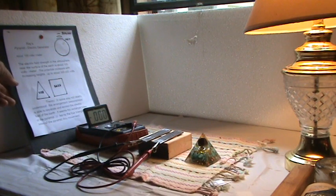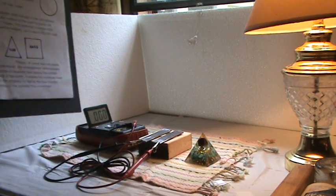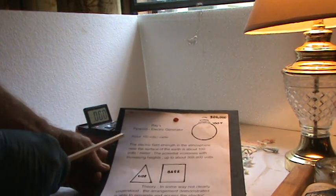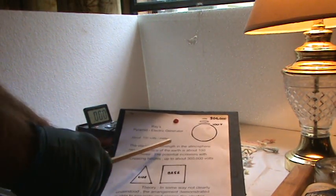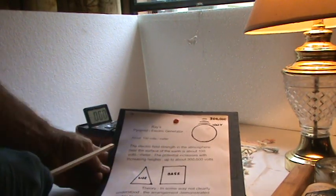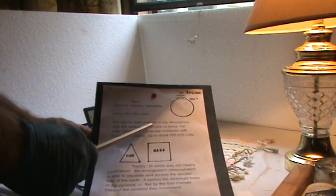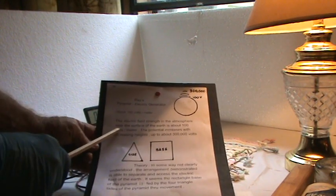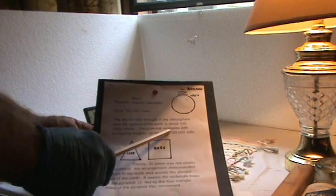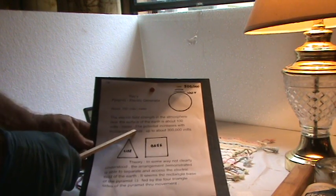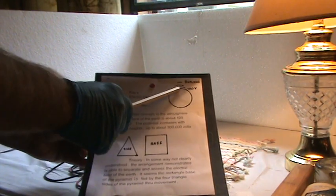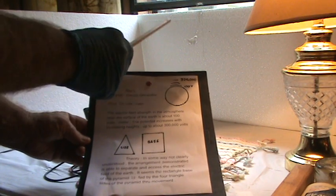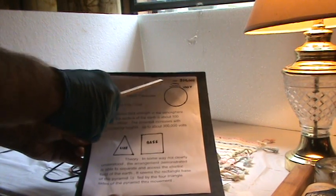I'm going to show you where we're headed before we take some readings. There's about a hundred volts per meter at the surface of the earth. The electric field strength in the atmosphere near the surface of the earth is about 100 volts per meter. The potential increases with increasing heights up to about 300,000 volts.